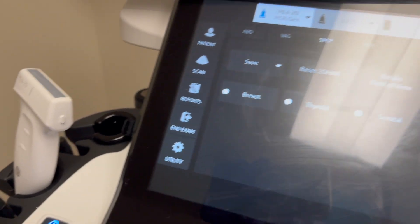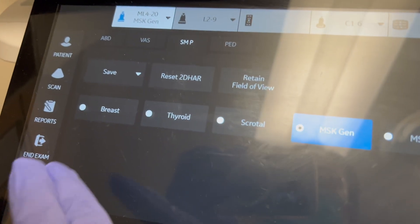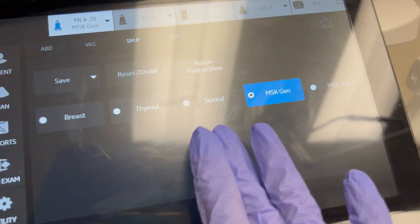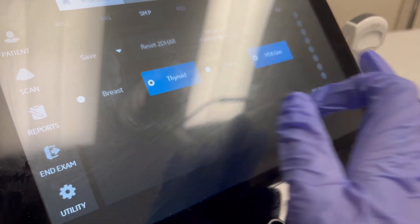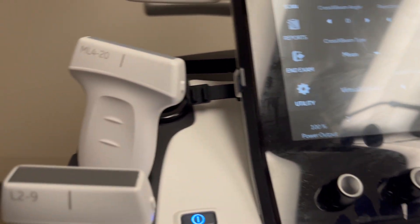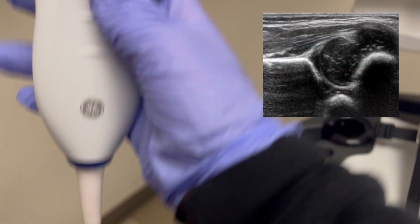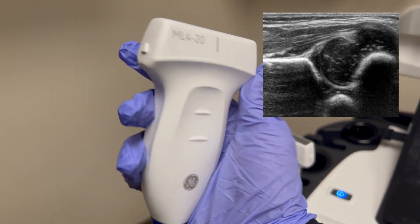You can click on the machine to see what other exams we use this probe for: breast, thyroid, scrotal, musculoskeletal general or penetration, and baby hips are also very common that we use this probe for.